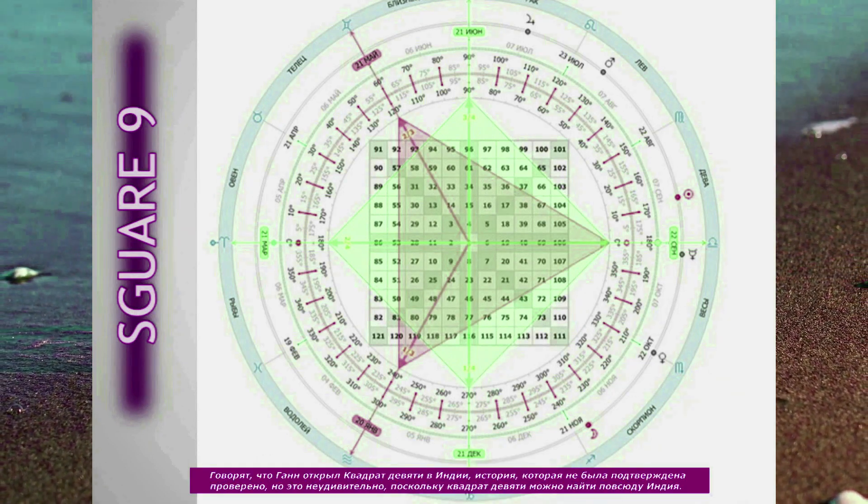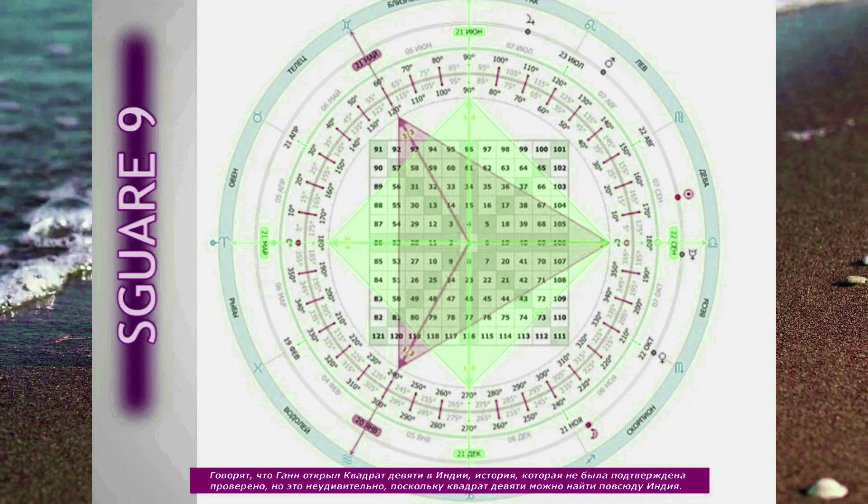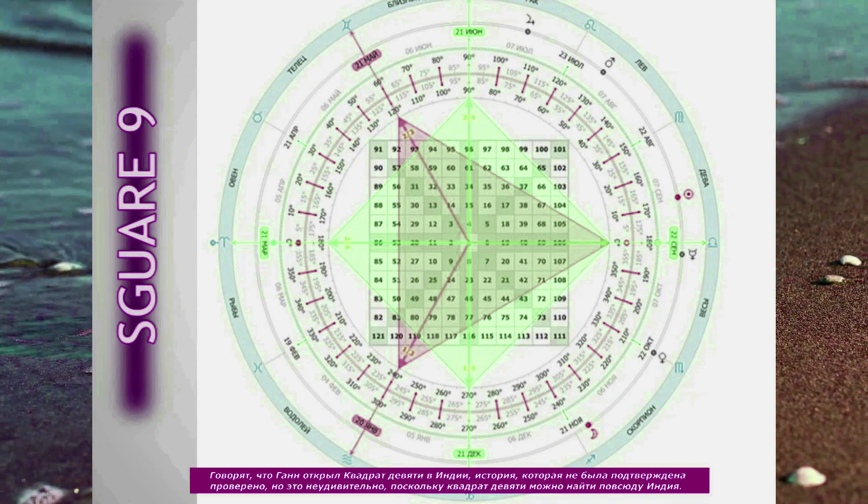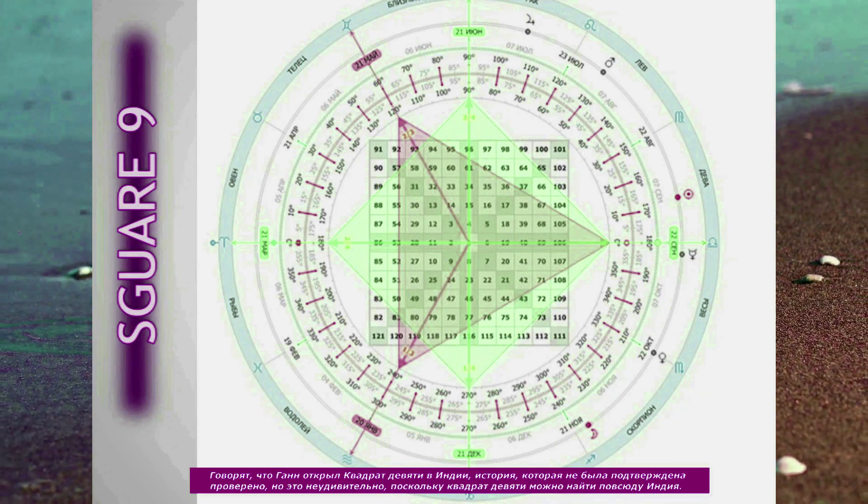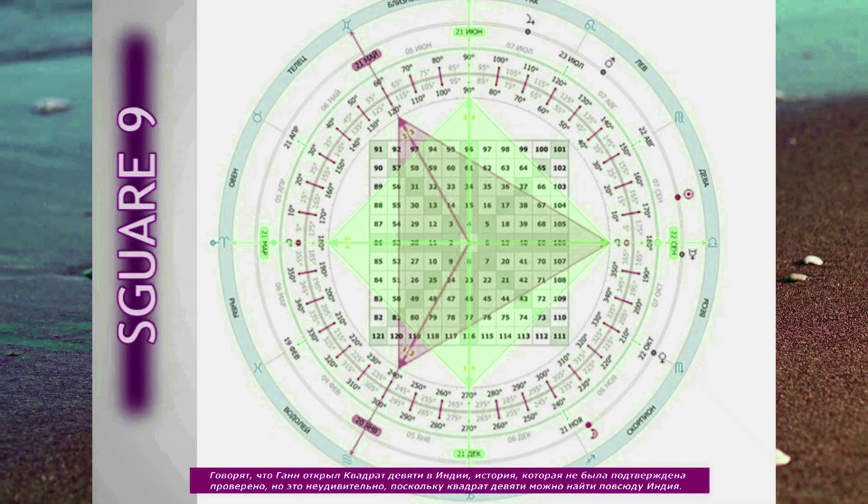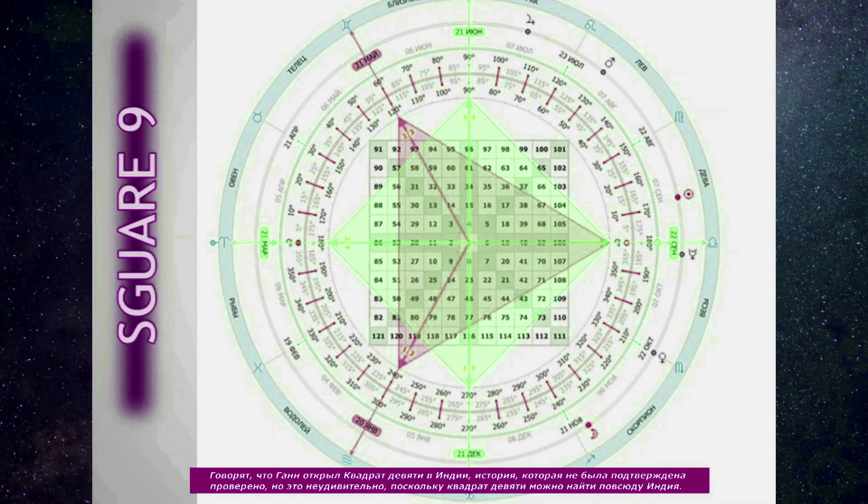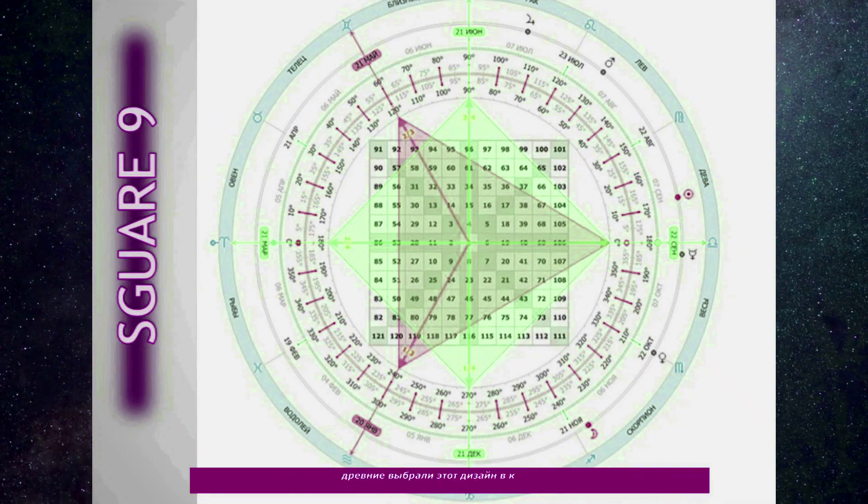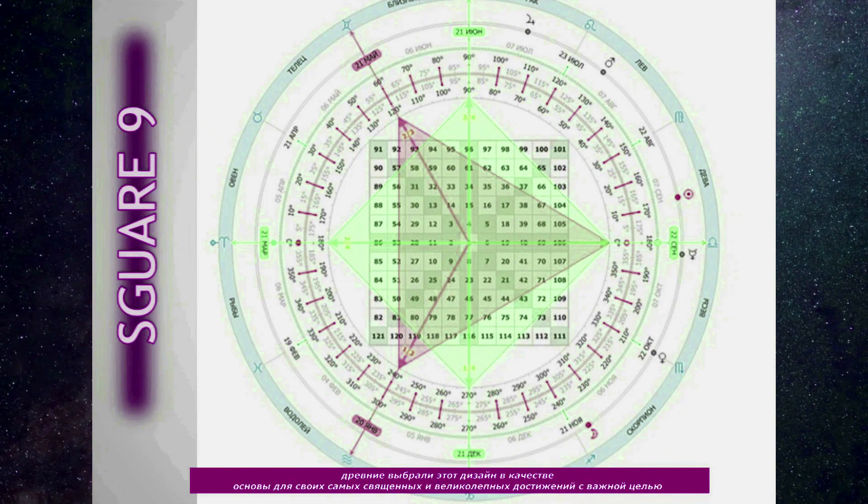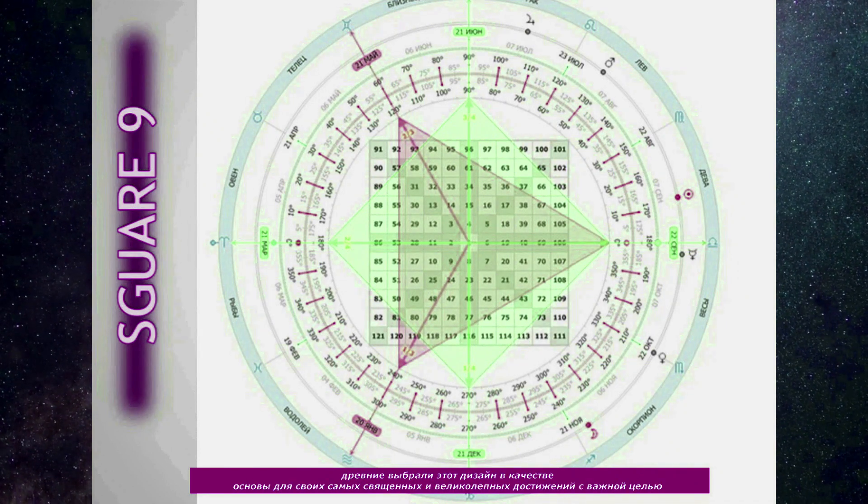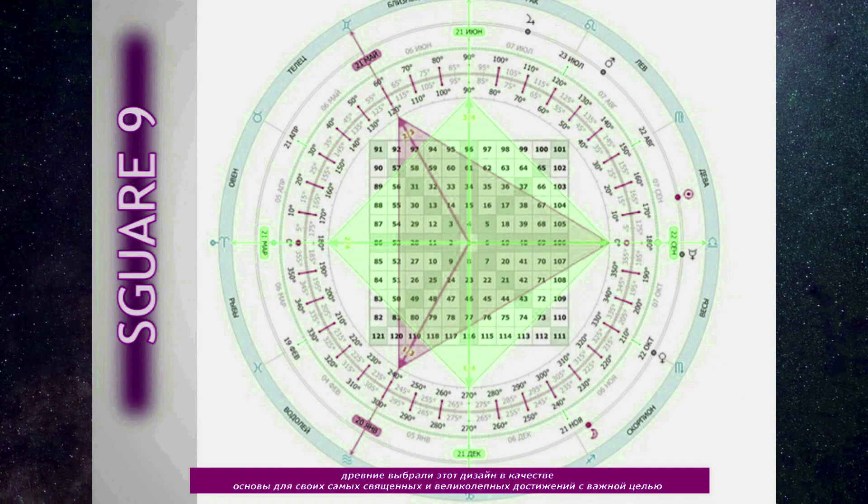It is said that Gann discovered the Square of 9 in India, a story that has not been verified, but would not be surprising since the Square of 9 may be found all over India. Ancients chose this design as the basis for their most holy and magnificent achievements for an important purpose.